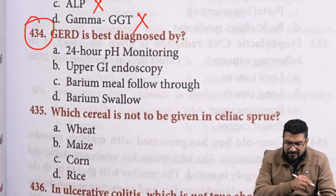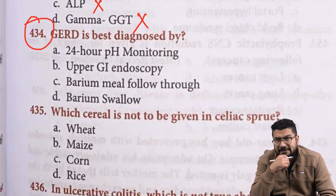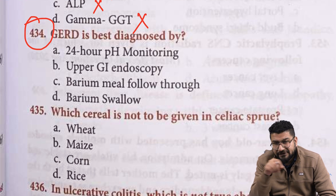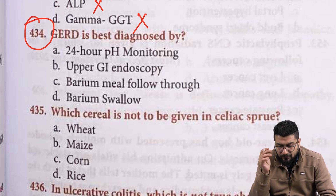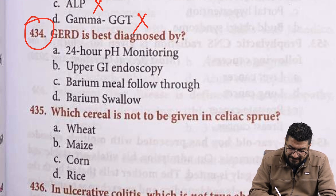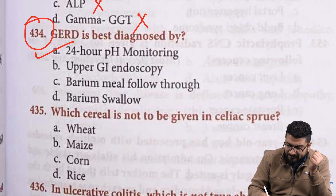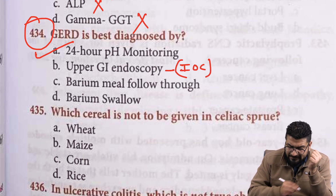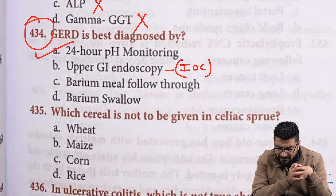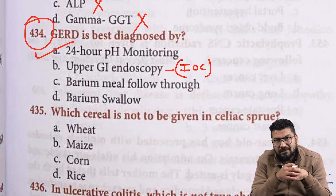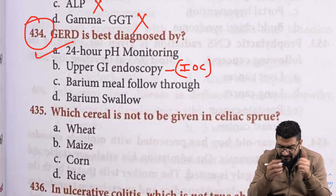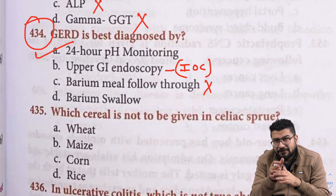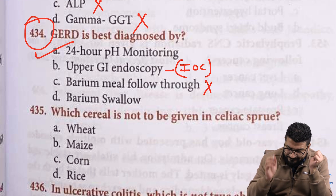For GERD, best diagnosed by what is the best test? If they are asking investigation of choice, the answer will be upper GI endoscopy. But the best test — gold standard — will be 24-hour pH monitoring. If I ask investigation of choice, the answer will become upper GI endoscopy. Barium meal we do for intestinal problems; barium swallow can be used as a screening test for disorders like achalasia cardia.